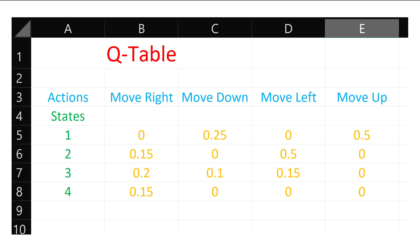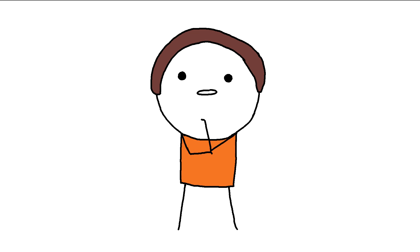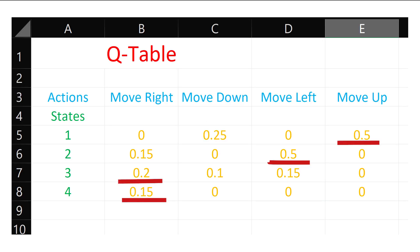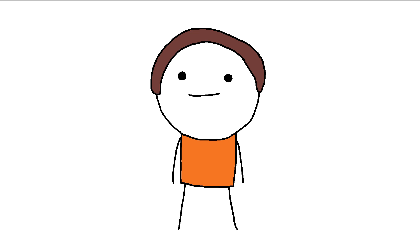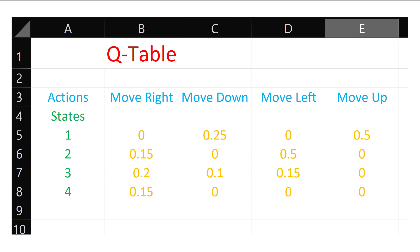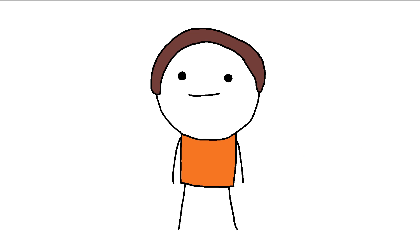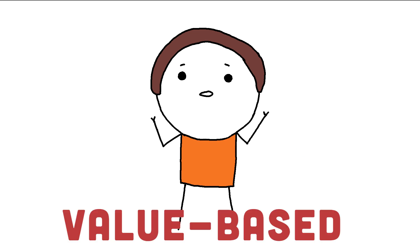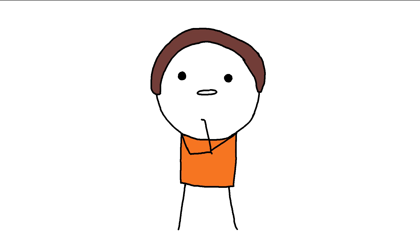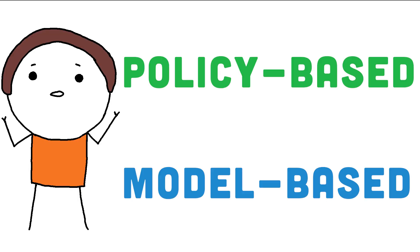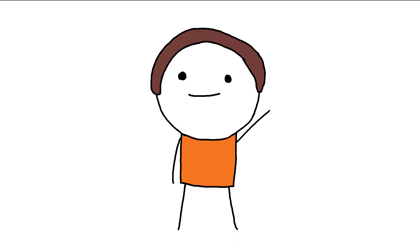Looking back at our Q-table, you might ask: how do we derive a policy from that table? One way of deriving a policy would be to perform the best action in every state. During training, it makes sense to occasionally introduce some random actions to ensure the agent explores the environment, because otherwise the agent would only follow a single state-action path every time. Algorithms that derive the policy from a learned Q-table are called value-based approaches. But there are other methods that learn the policy directly or learn the model of the environment — those are called policy-based and model-based approaches respectively. We will get to those in future episodes.